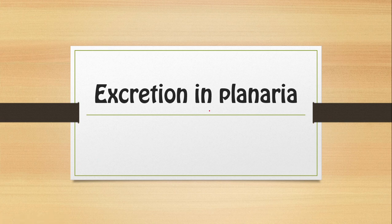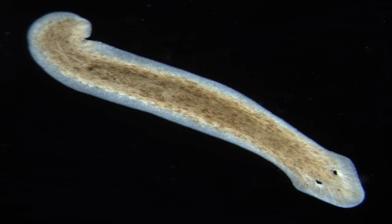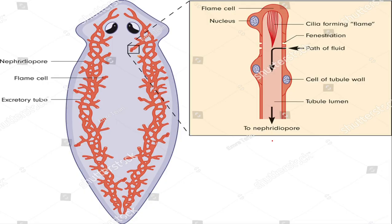But first of all, let us know what planaria is. Here you have a figure of planaria. Planaria is a flatworm and it belongs to phylum Platyhelminthes. All flatworms are aquatic — they live in an aquatic environment, which can be fresh water or sea water.